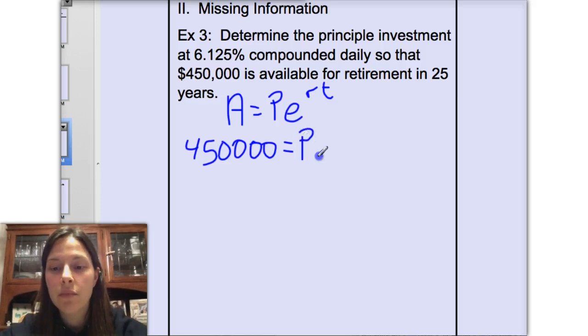We're looking for the initial investment. We found an account compounded continuously. Those are rare. We know the interest rate. Convert that to a decimal and multiply by the number of years, 25.